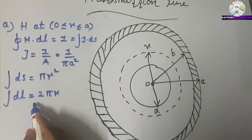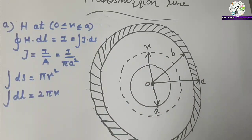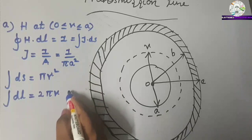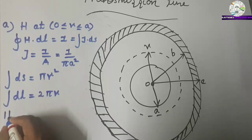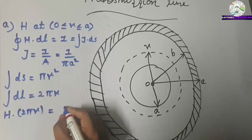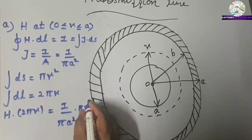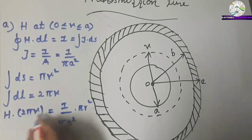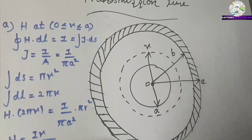The integral of dL equals the circumference of the circular conductor of radius R. Both values are substituted into the equation, giving H times 2 pi R equals I divided by pi A squared, then times pi R squared. From this, H equals IR divided by 2 pi A squared.